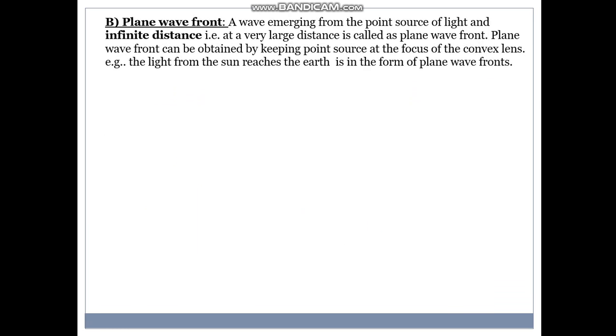So plane wave fronts are wave emerging from the point source of light. An infinite distance that is at a very large distance is called plane wave front. Plane wave front can be obtained by keeping one source of light at the focus of a convex lens. For example, light from the sun rays reaches the earth in the form of plane wave fronts.